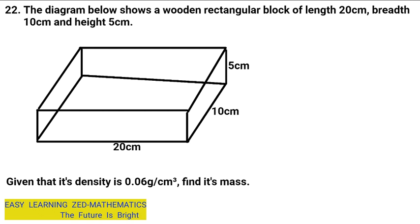To find the mass, we need to multiply the density by the volume, because the formula for finding mass using density is: mass equals density times volume. When we look at the statement, the volume is not given. However, we are given dimensions that can help us find the volume. So the first thing we are going to do is find the volume of this block.